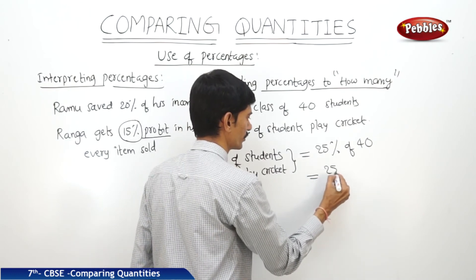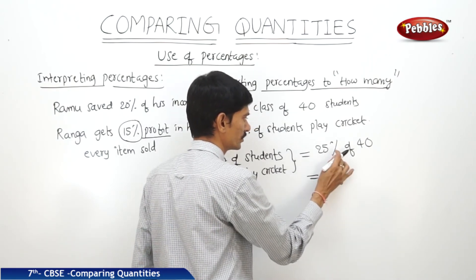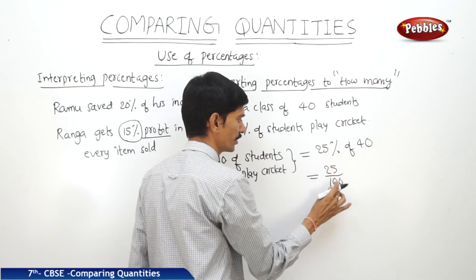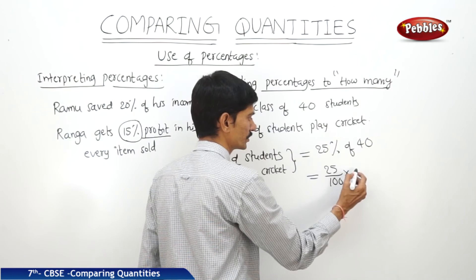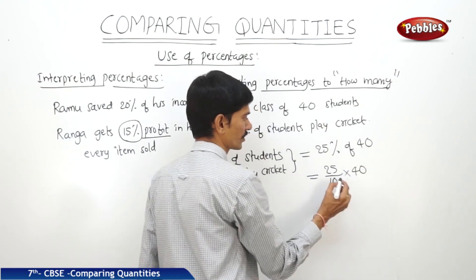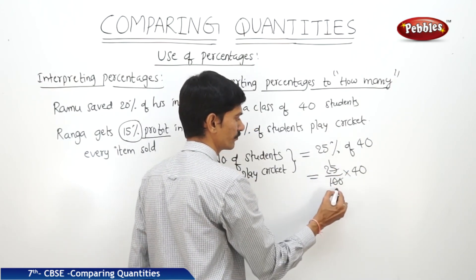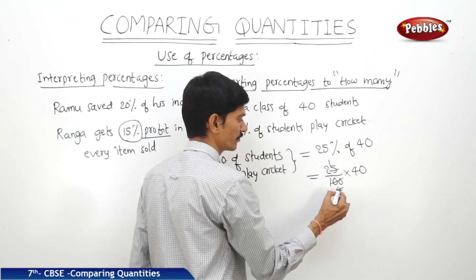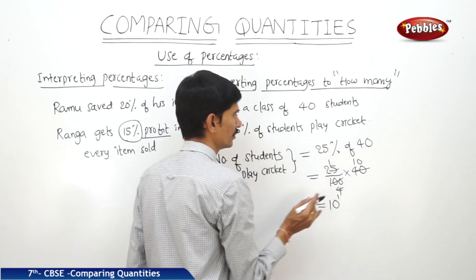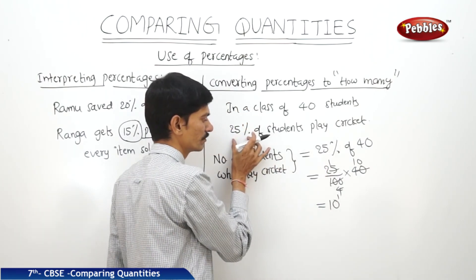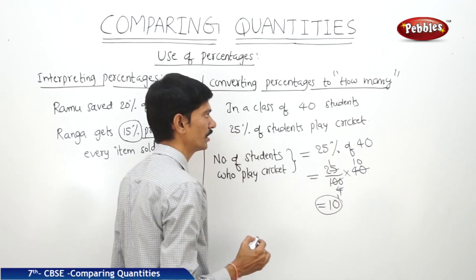This can be written as 25/100 into 40 — since percentage means per 100, and the total number of students is 40. We can cancel: 25 fours are 100, and 4 ones are 4, 4 times 10 is 40. So this equals 10. So 25% means there are 10 students who play cricket.